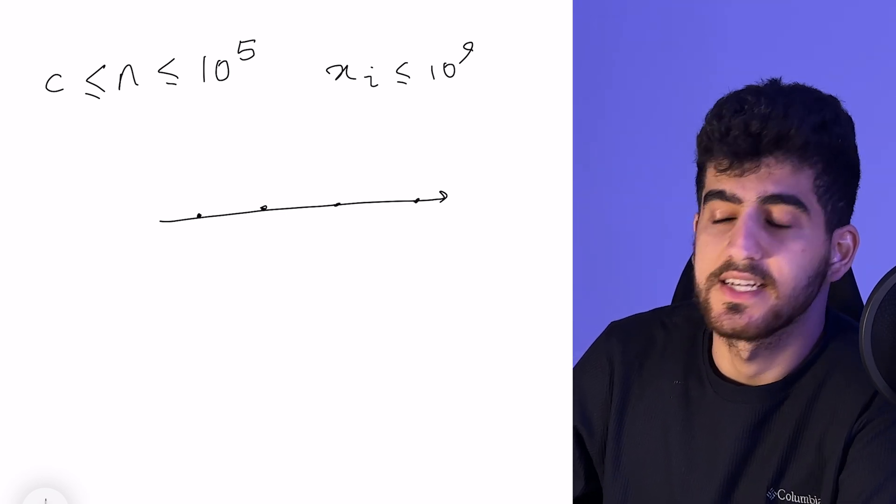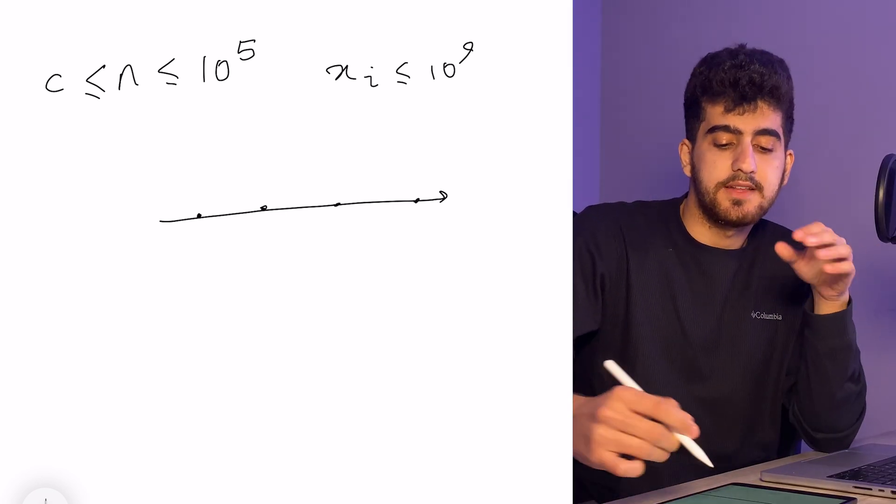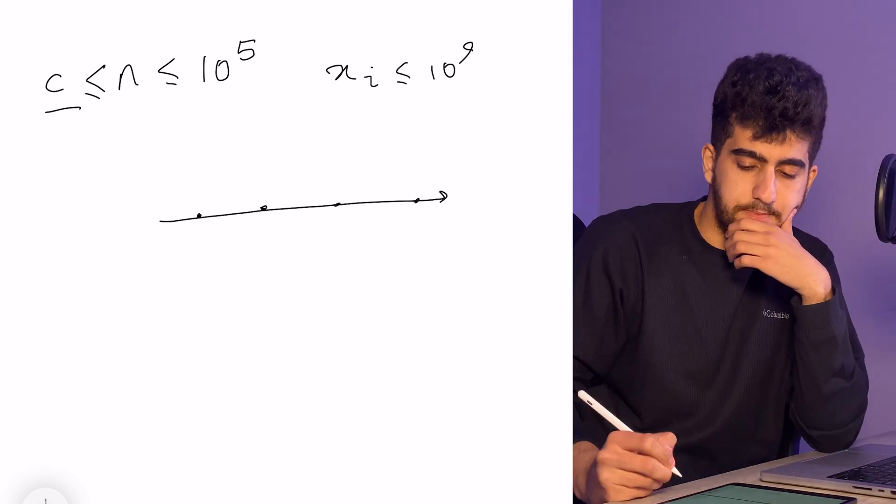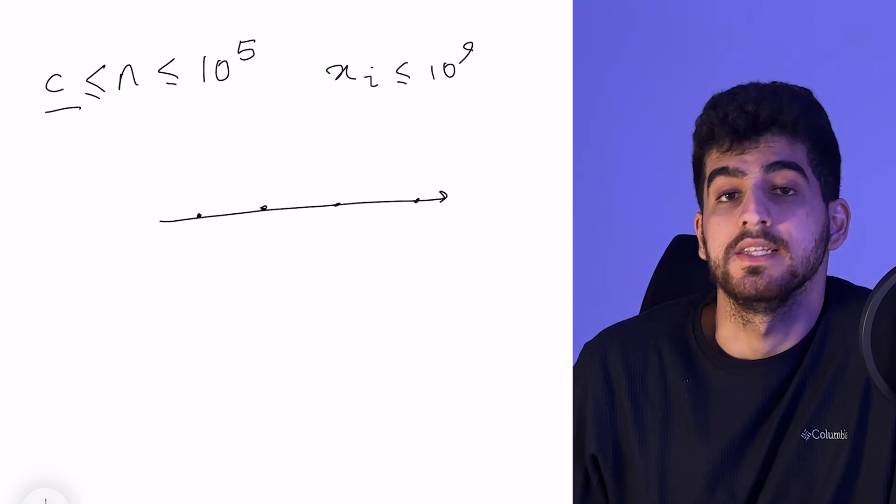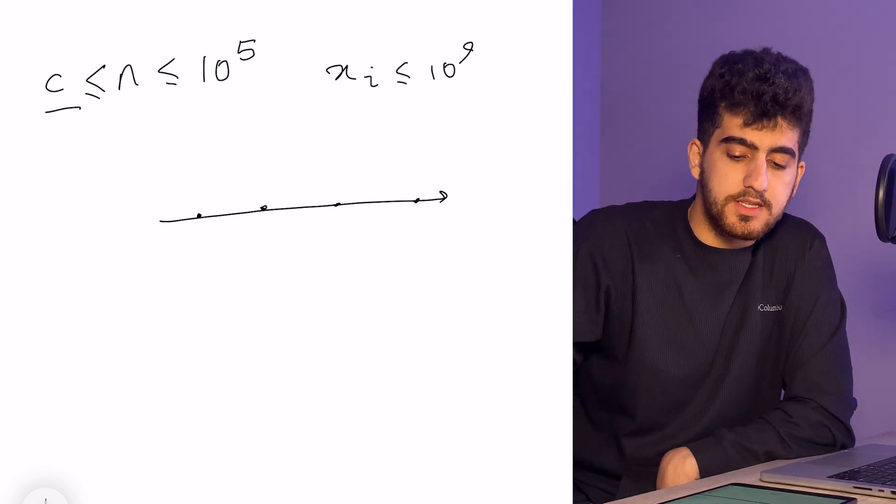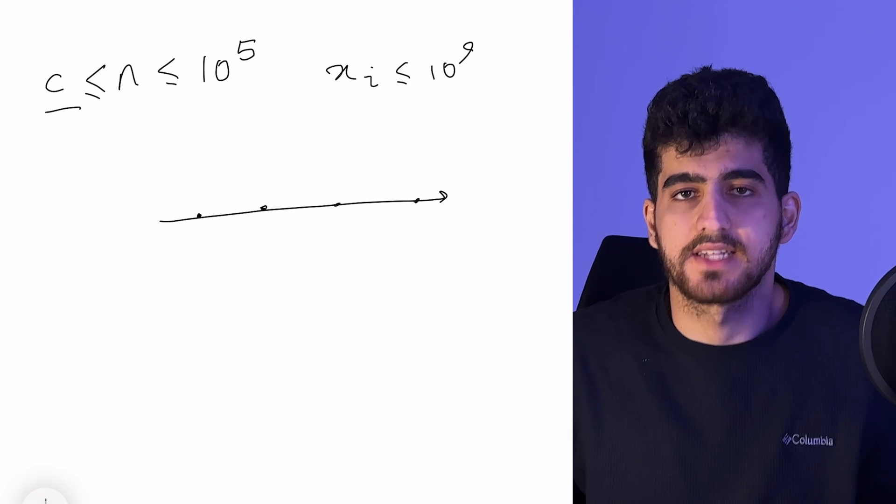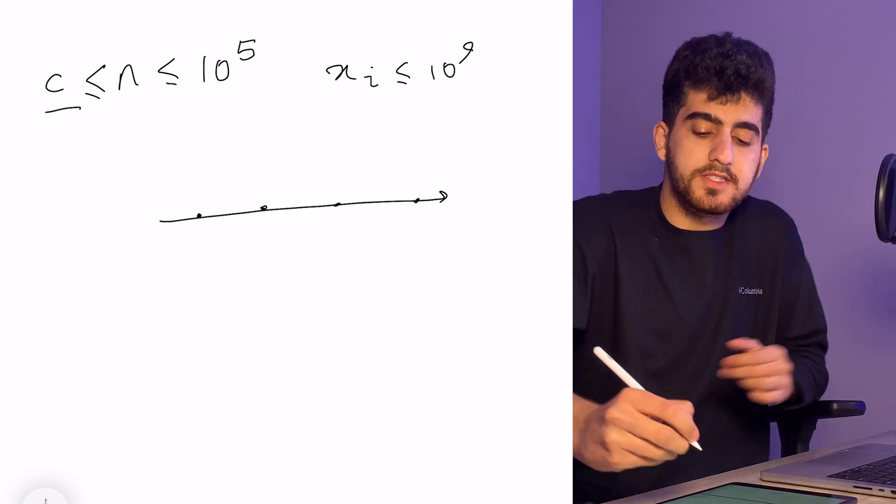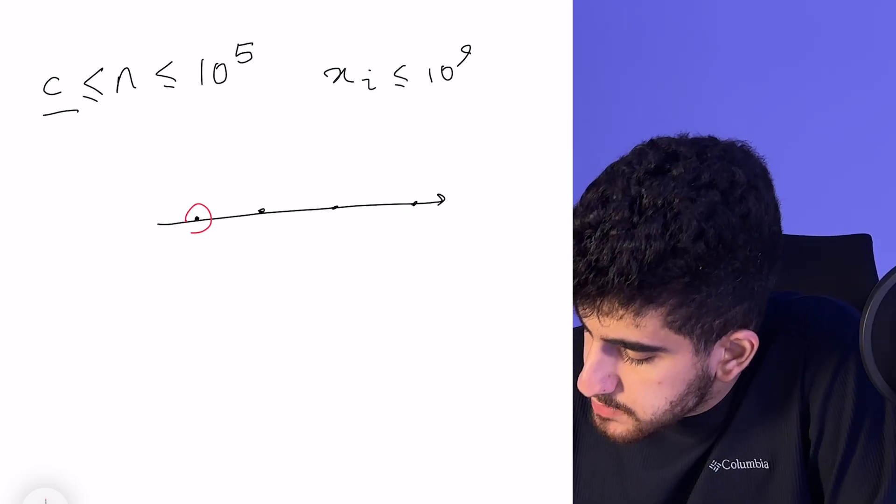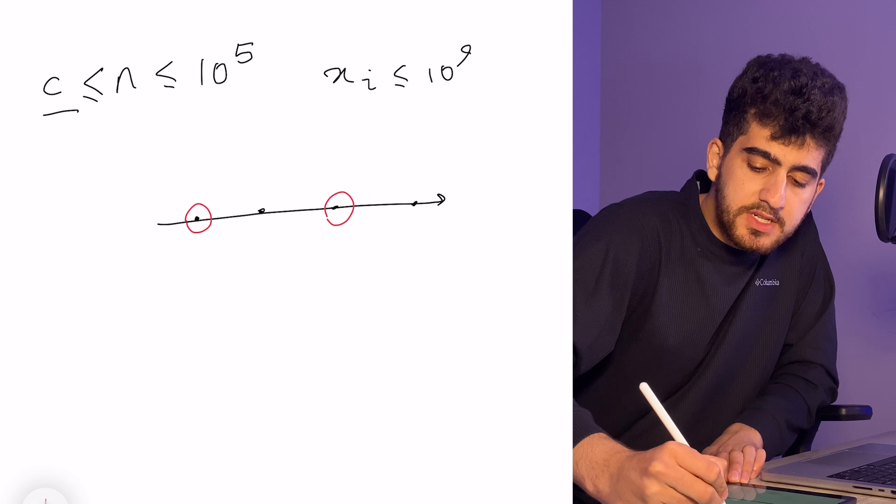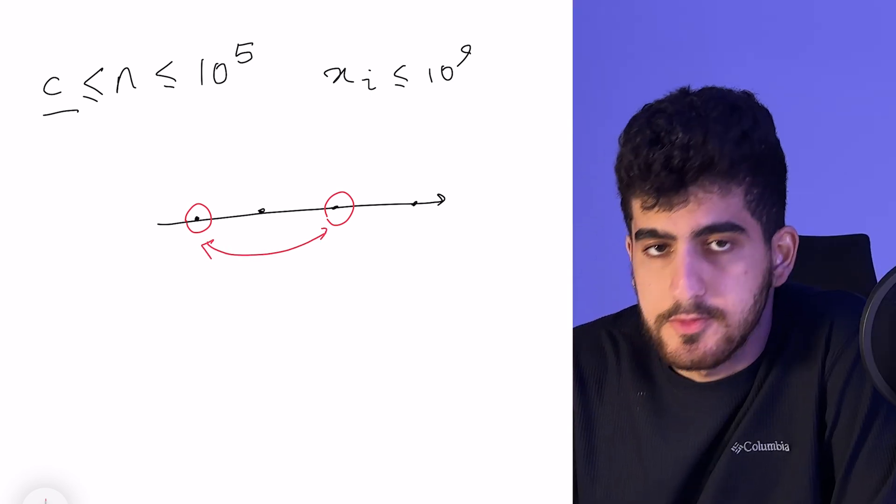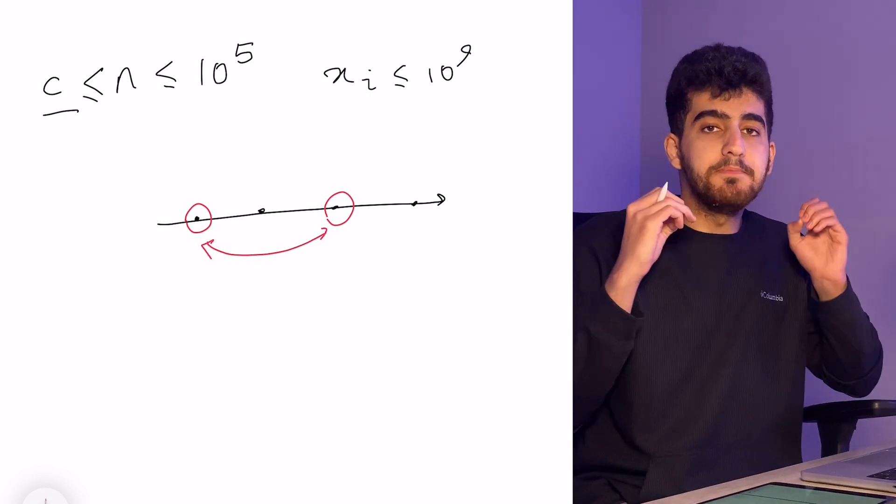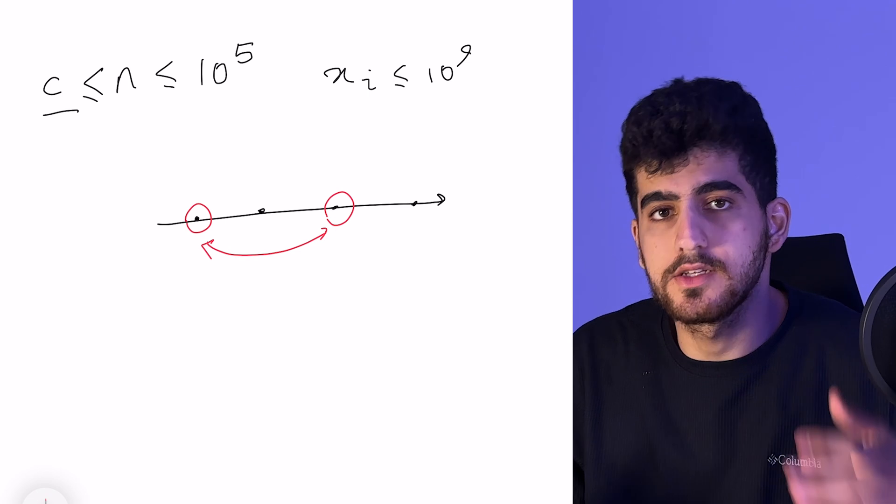This problem says that we have N cows and we want to choose C of them. All the cows are in the x-axis. We want them to have the maximum distance from each other, so the cows that we choose should be in a way that the minimum distance between them would be maximum. We want to maximize the minimum distance between any two cows.